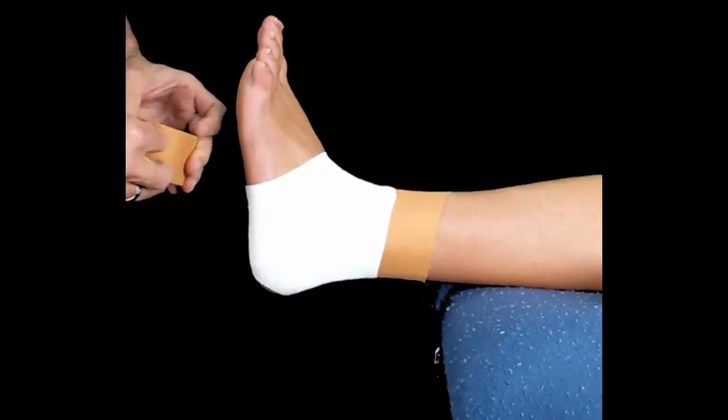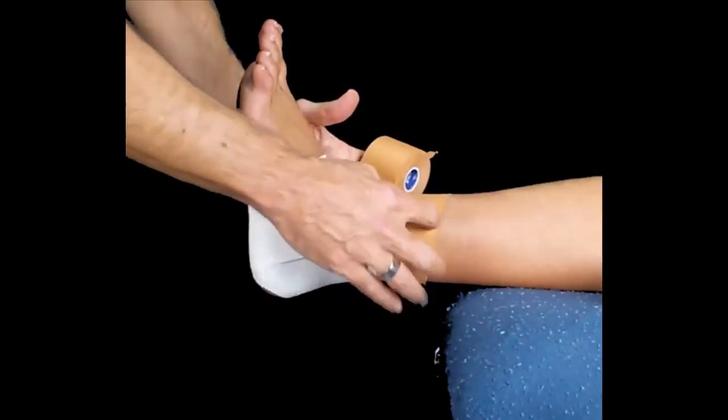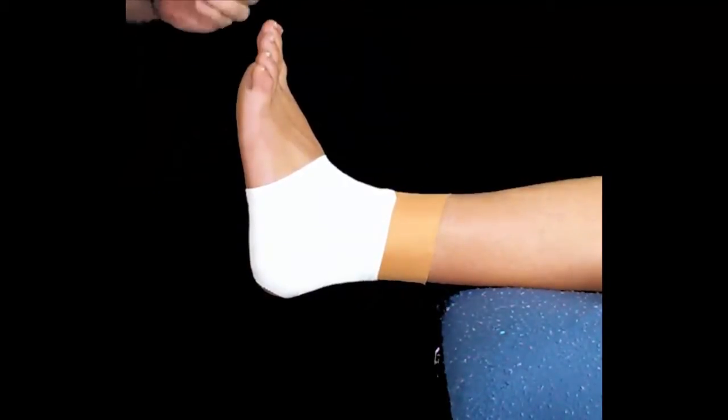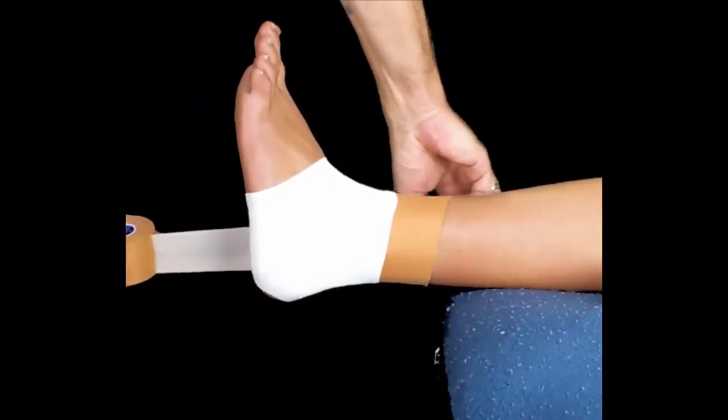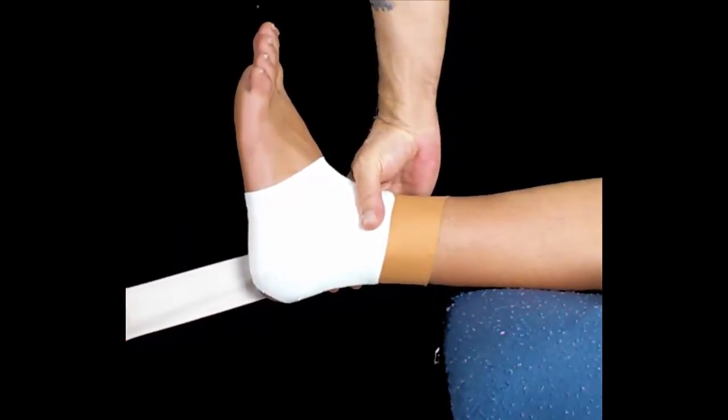Next, we're going to start with our stirrups. You'll notice that when using 50mm tape, we only use one anchor because the tape is wide enough. We're going to start our stirrups from the inside, having this sit right back close to the end of the heel.